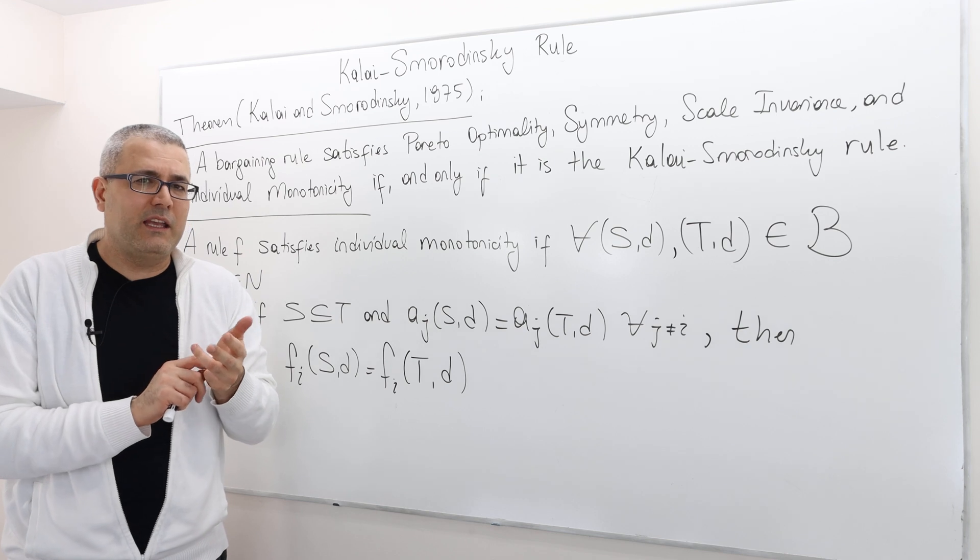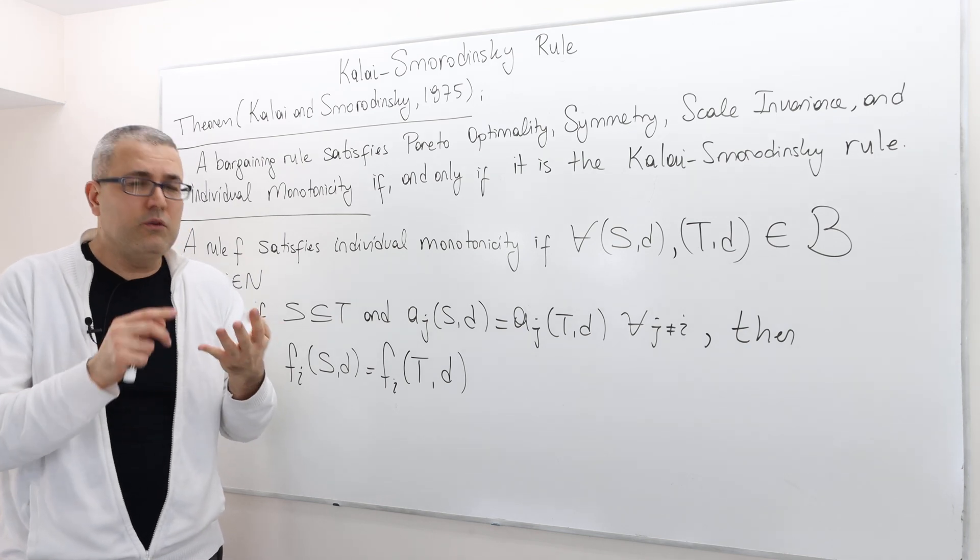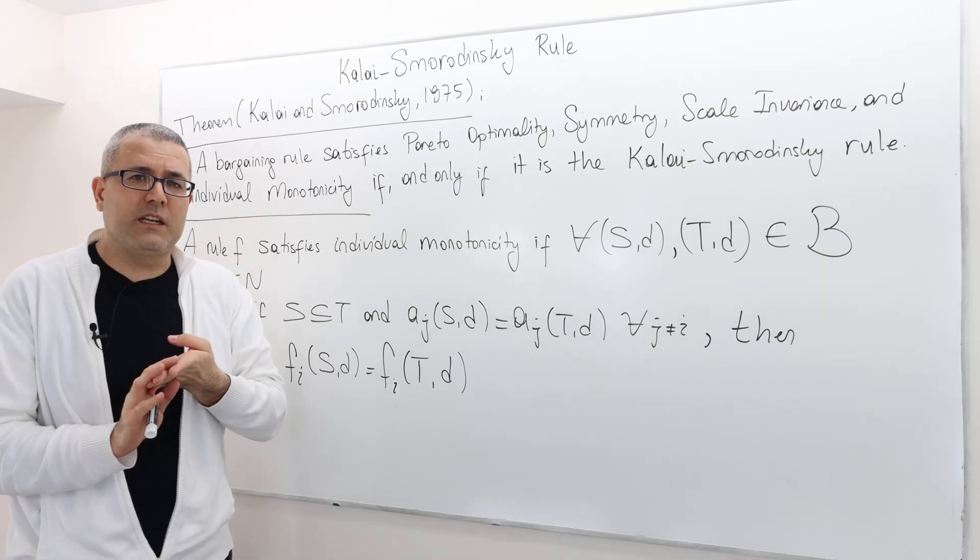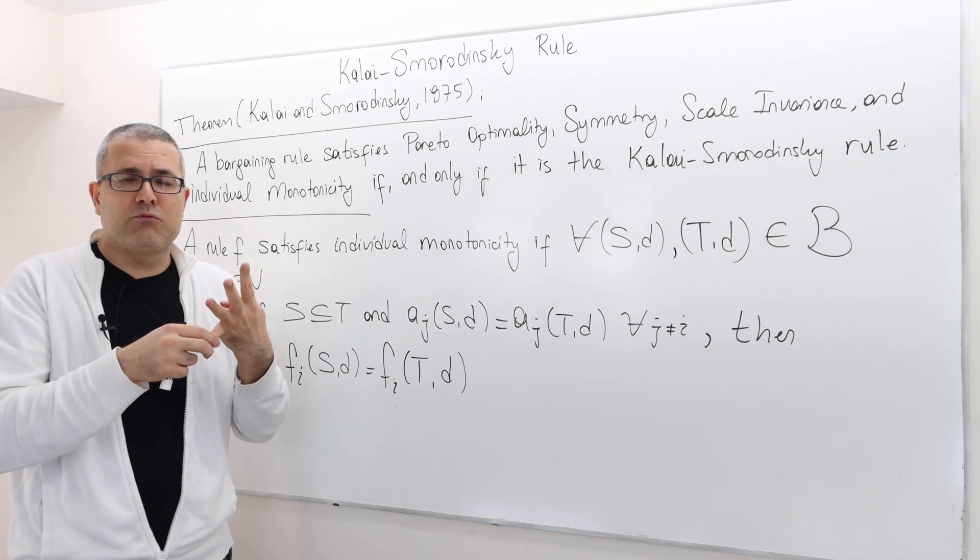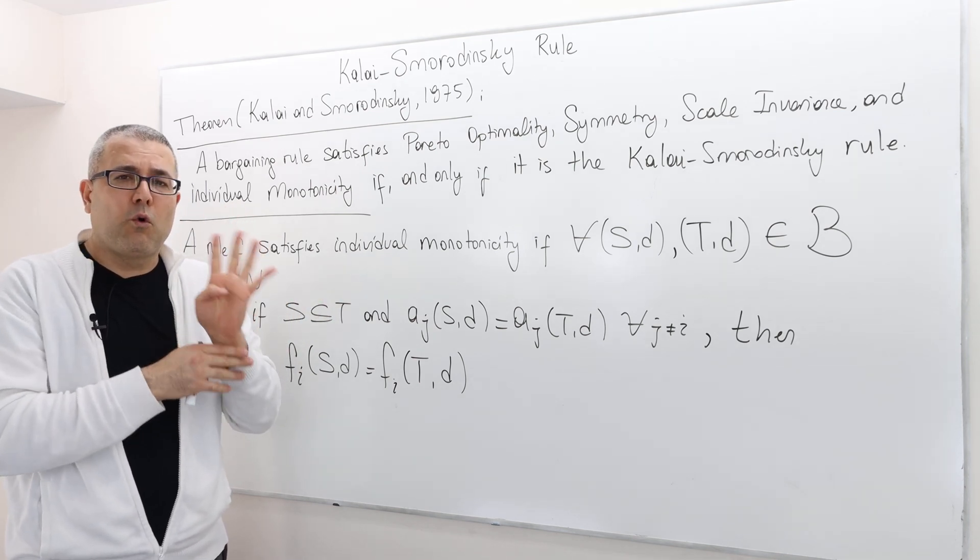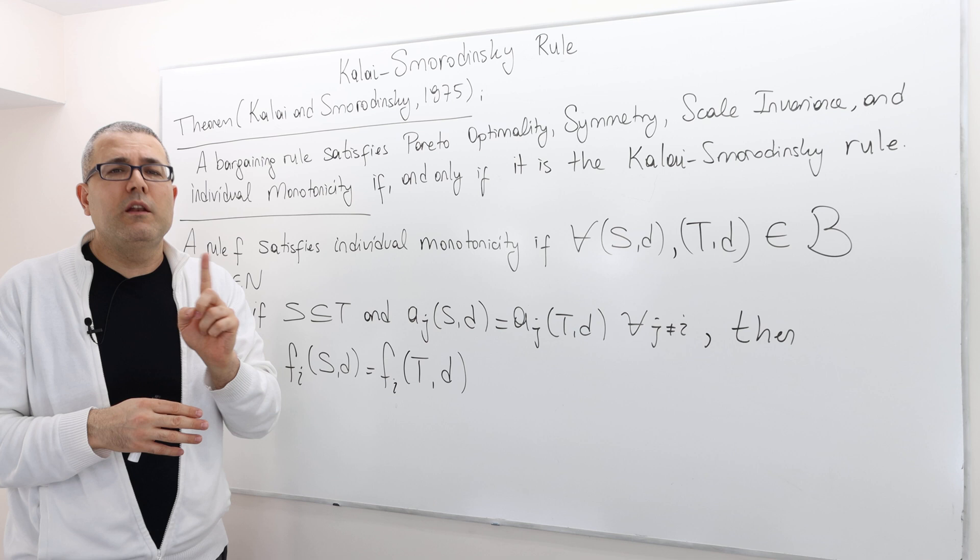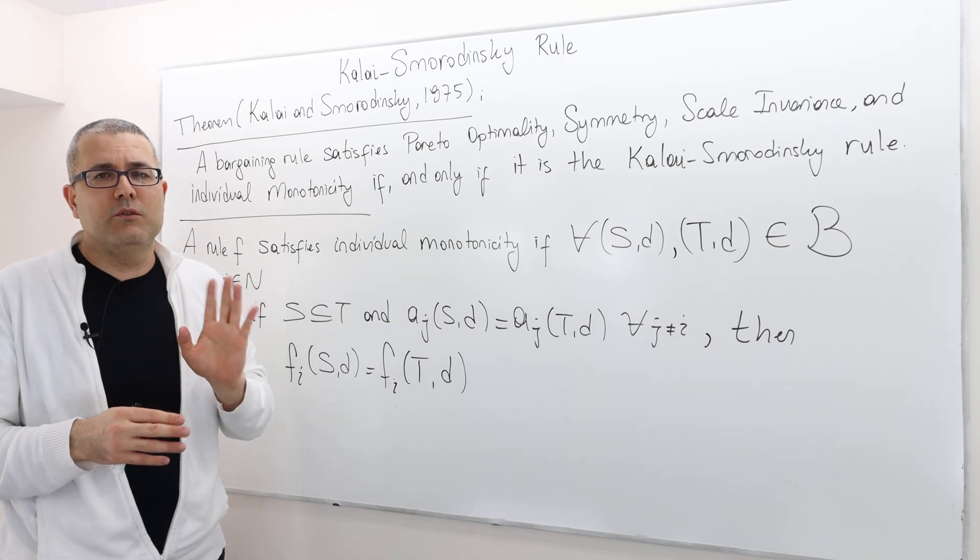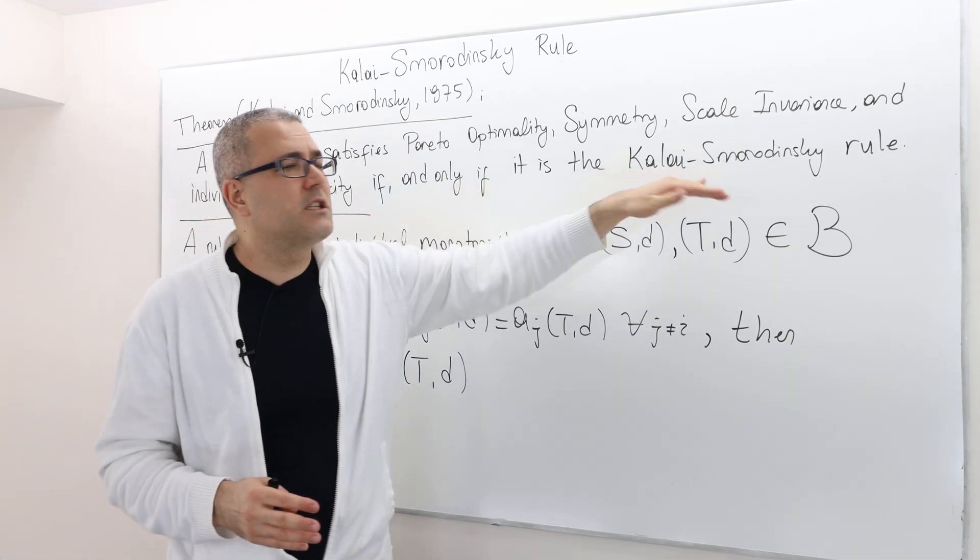So if you don't like IIA, if you think it is too strong, you can use individual monotonicity. All right, so it's a new rule. With those four rules, there's only one bargaining rule that you should be using, and it's the Kalai-Smorodinsky rule.